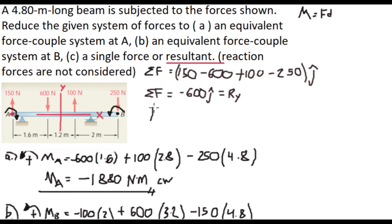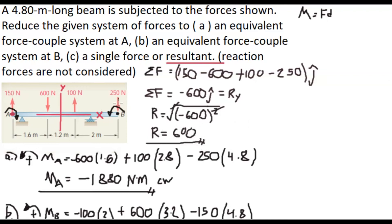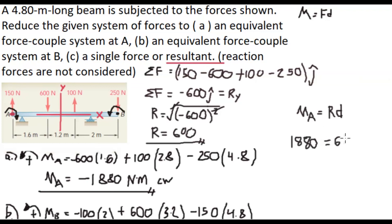Since we are looking for the resultant R, it equals the square root of the sum of squared components. With only a Y-component of negative 600, R equals 600 N. Now to find where this resultant acts, we use point A as reference: moment at A equals force times distance, so 1880 equals R times D, which gives 600 times D. Solving, D equals 3.13 meters from point A.